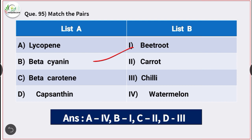Beta-carotene is present in carrot and capsaicin is present in chili.